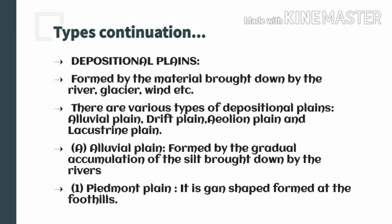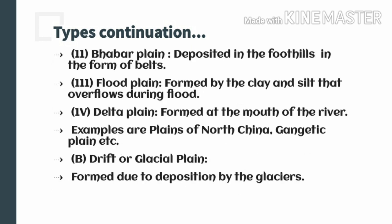Let us talk about the alluvial plain. This alluvial plain is formed by the gradual accumulation of silt brought down by the river from the mountain, and when that water overflows and deposits the material it has carried, different types of alluvial plains are formed. The piedmont plain is a type of alluvial plain — it is fan-shaped and formed at the foothills of a mountain. The size of the piedmont plain depends on the amount of deposition: if deposition is more, the fan is larger; if less, the fan is smaller.